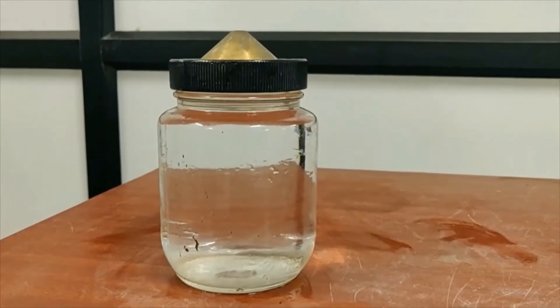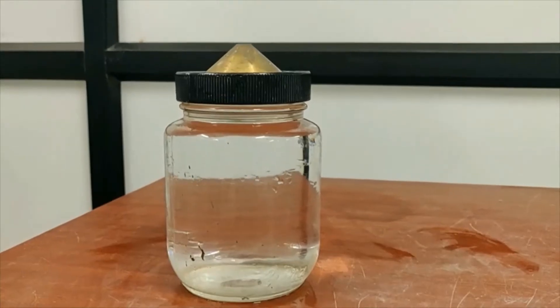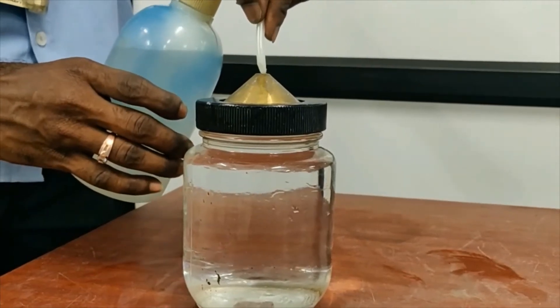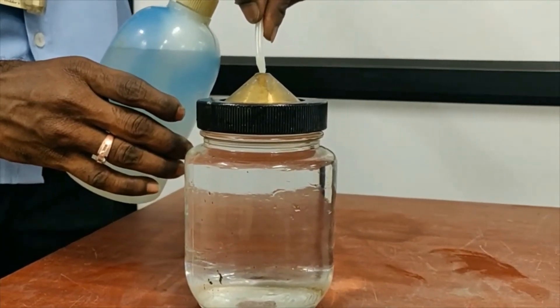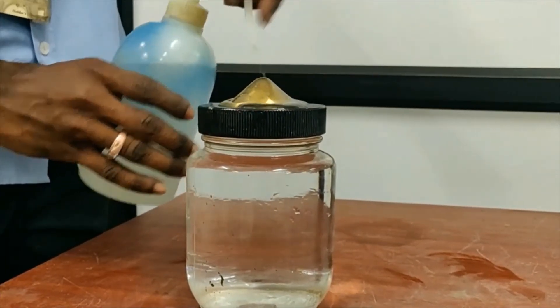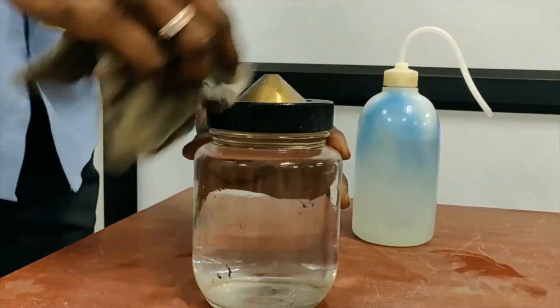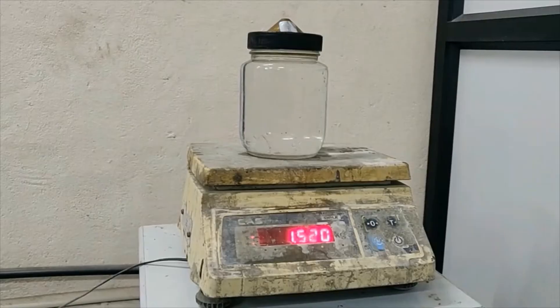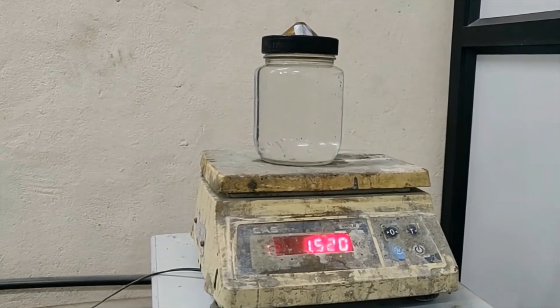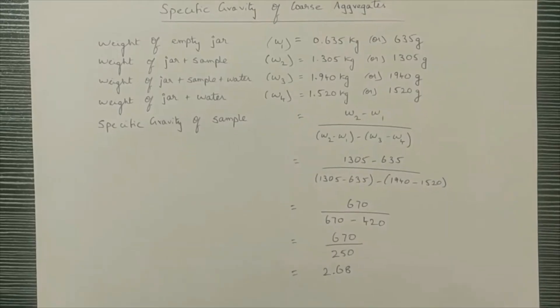Now the weight of the jar filled with water should be taken, which is W4. The water should be filled to the top of the lid. We are using the wash bottle to fill it. The top is being wiped off. W4 can be noted as 1.52 kilograms, which is the combined weight of jar and water.